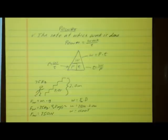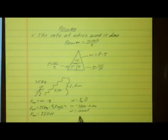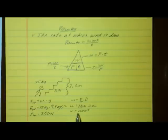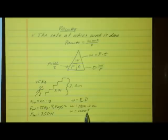It's interesting to note that the work done equals the energy expended. So in order to go up the stairs, you have to expend 1500 joules of energy by doing 1500 joules of work. Work and energy are measured in the same unit — joules.